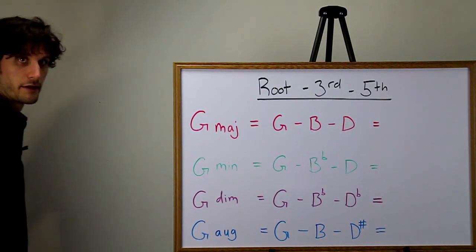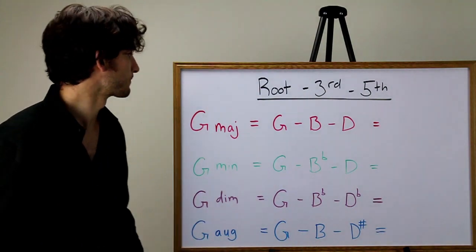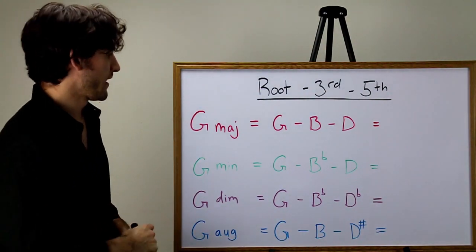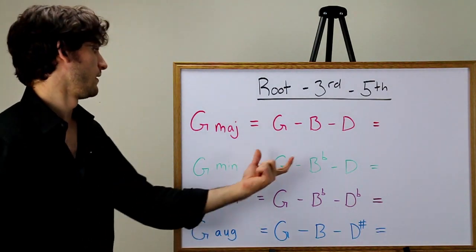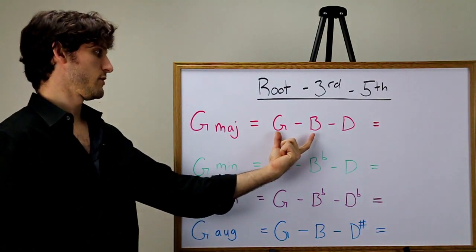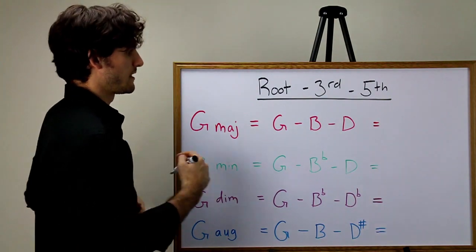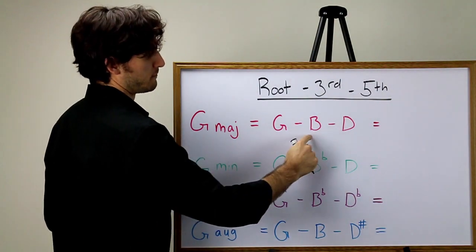Let's look at the G major chord. G major has the notes G, B, and D. From the lens of our previous model, we have a major third from G to B, and then we have a minor third from B to D.